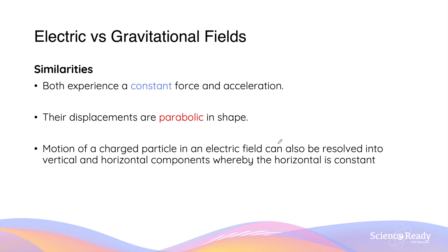Let's compare electric fields versus gravitational fields. The similarity of both fields is that a charge in both fields will experience a constant force and acceleration, which causes the displacement or motion to be parabolic in shape. Just like in a gravitational field, the motion of a charged particle inside an electric field can be resolved into a vertical and a horizontal component for the velocity, whereby the horizontal component is constant because there are no forces acting in the horizontal direction.